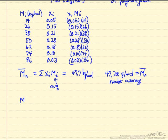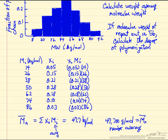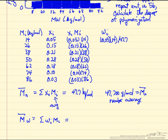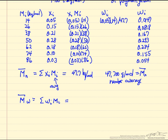You can also calculate a weight average, which is the sum of the weight fraction times the average molecular weight for each region. First we need to calculate the weight fraction: it's xᵢ times Mᵢ divided by the number average — for example, 0.05 multiplied by 14 divided by 47.7 for the first range from 8 to 20. We do the equivalent for the other terms to get all the weight fractions.